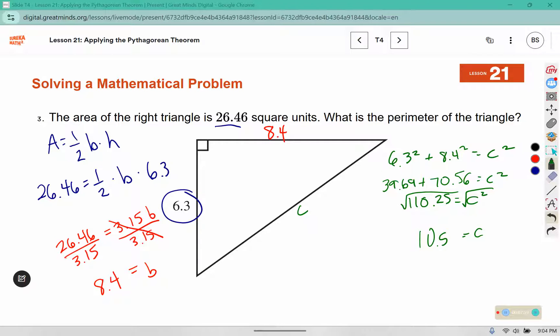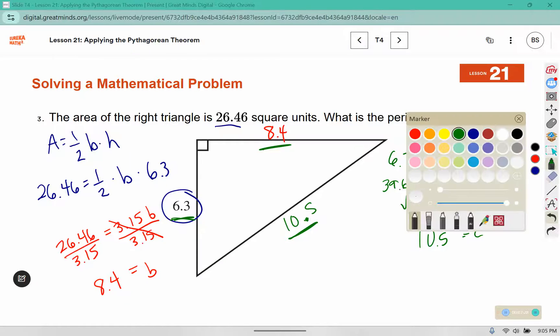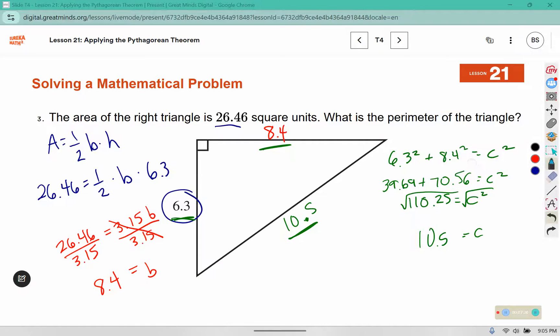So C is 10.5. To find the perimeter we add up all the side lengths. So 10.5 plus 6.3 plus 8.4 will give us our perimeter, which is 25.2 units.